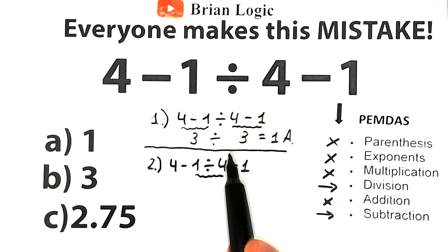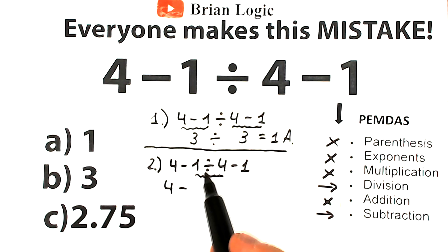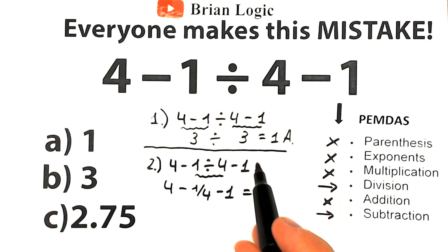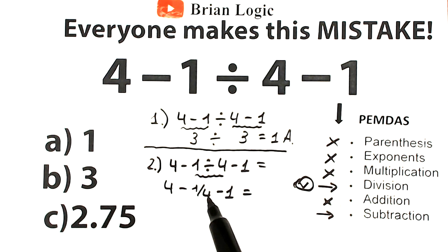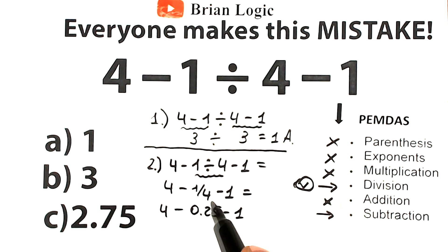So 1 divided by 4 equals one-fourth. That means we have 4 minus one-fourth, minus 1. We can rewrite one-fourth as 0.25. We complete the division step — we divided 1 by 4 — and now move to the subtraction steps.